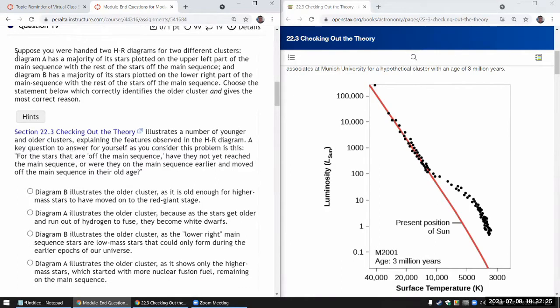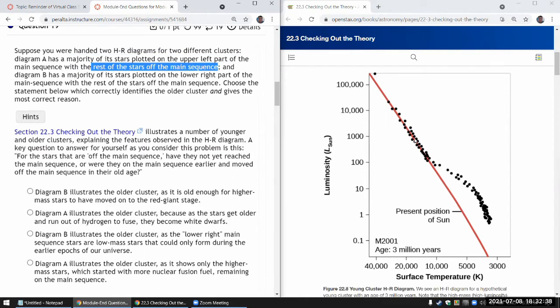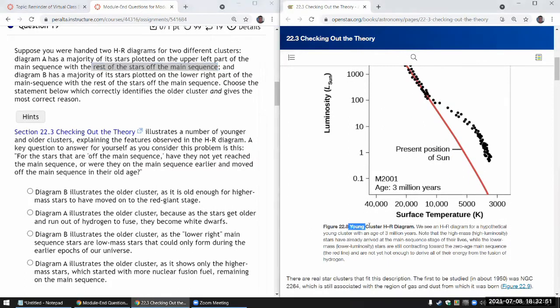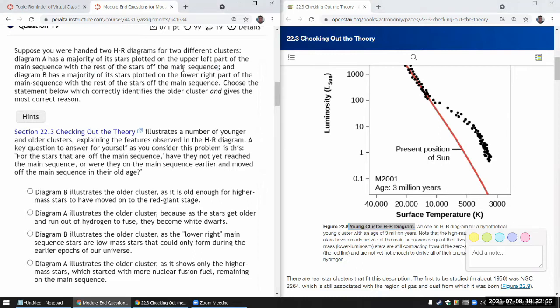For diagram A, this is the word description: majority of the stars plotted on the upper left part of the main sequence, and it says the rest of the stars off the main sequence. I'm on this page because the appearance of this diagram fits the description there. This is what's described as a young cluster HR diagram. So that's diagram A.